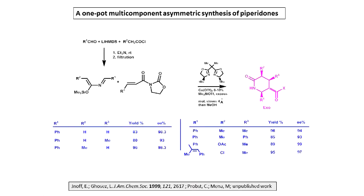So we ran the one-pot reaction. We had the catalyst, we had copper — no reaction. We added more and more copper, up to 50% copper catalyst. It worked, but with no enantioselectivity, of course, because it was just copper catalysis. We thought this was probably not going to work.